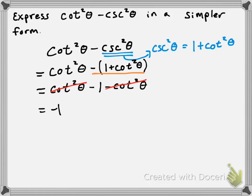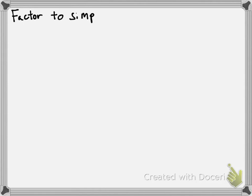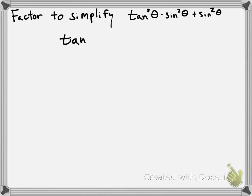Let's take a look at one more example. We're going to factor to simplify tangent squared of theta times sine squared of theta plus sine squared of theta. We want to simplify that expression, and we're going to start by factoring. So: tangent squared of theta times sine squared of theta plus sine squared of theta.